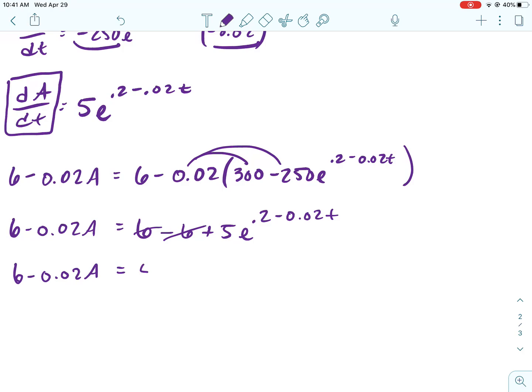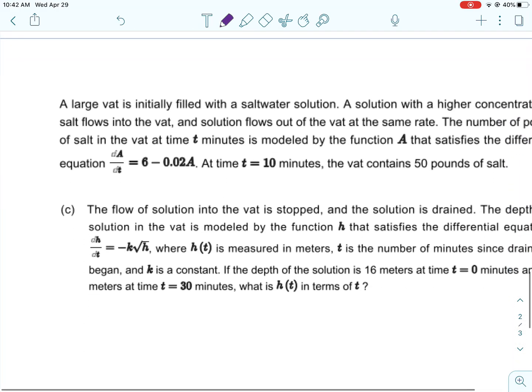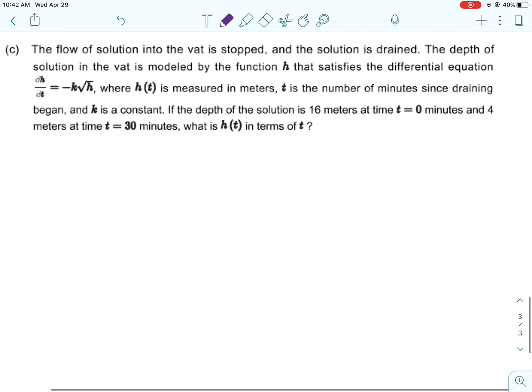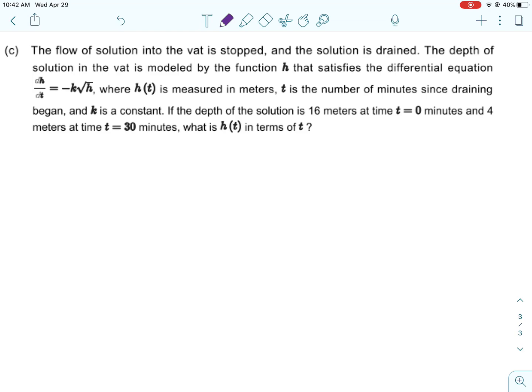And then I would go ahead and distribute that negative 0.02. And then 6 minus 6 is 0. So it shows that these two things are equal. That was kind of crazy. I ended up working.